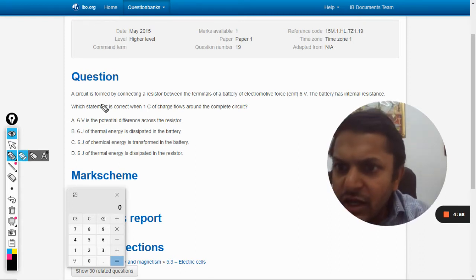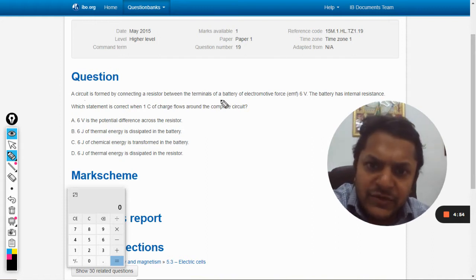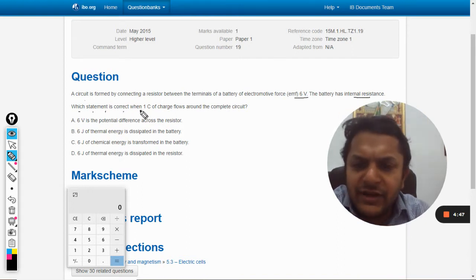In this question, a circuit is formed by connecting a resistor between the terminals of a battery of EMF 6 volt. The battery has internal resistance. Which statement is correct when one coulomb of charge flows around the complete circuit?